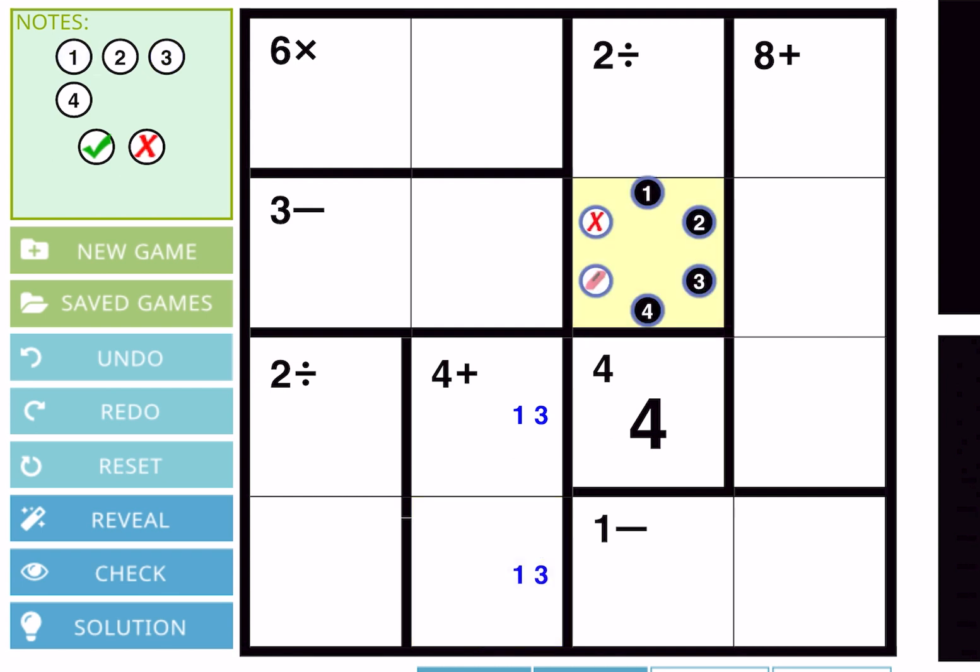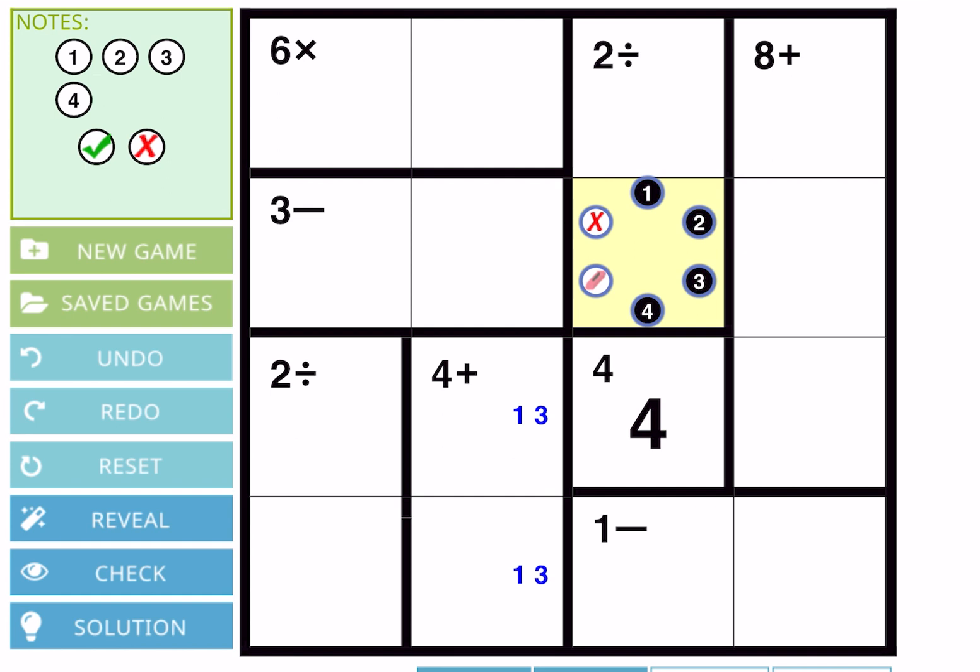Four and two, and two and one. Four and two cannot be possible because there is four already here, so here should be two and one only.